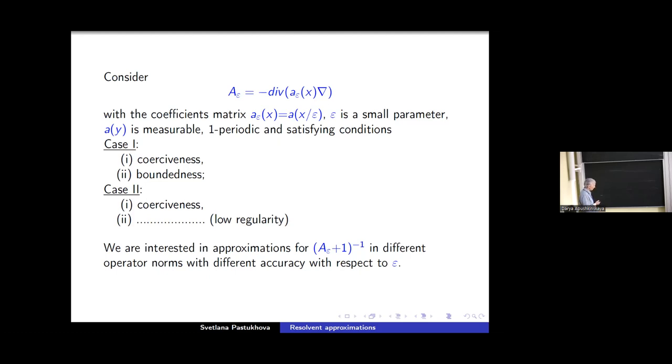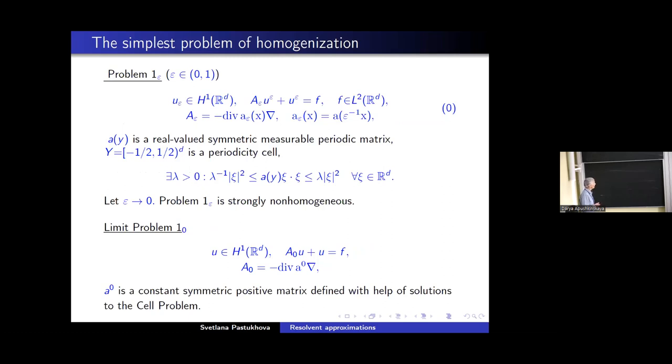So the first condition means that we have formally elliptic operator. And in the second case, we will relax. The second condition will allow coefficients to be unbounded in some extent, which we will specify later. But I will start with the simpler case one and consider the simplest problem of homogenization. You see here the Resolvent equation in the whole space R^d with right side function F with the operator A_ε, which is divergent type, second order.